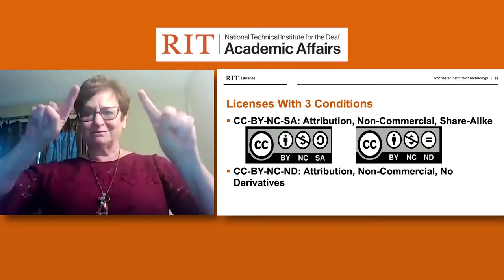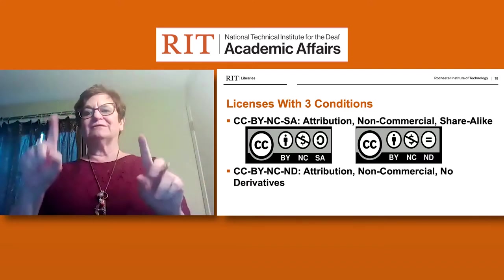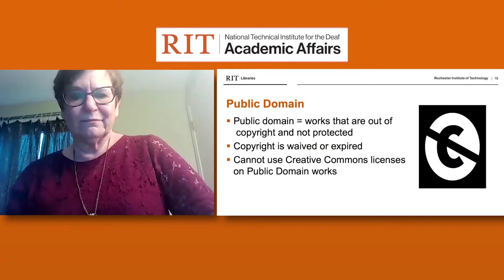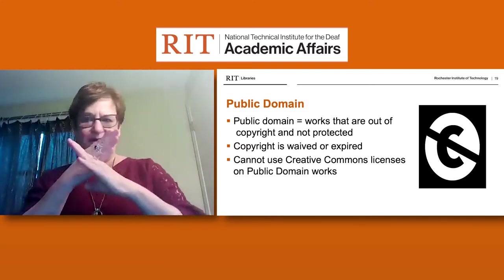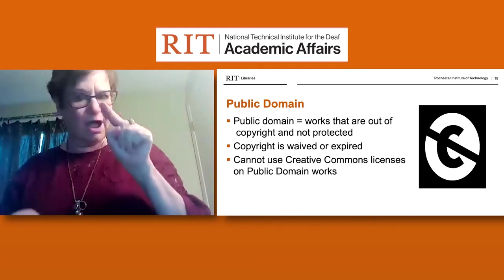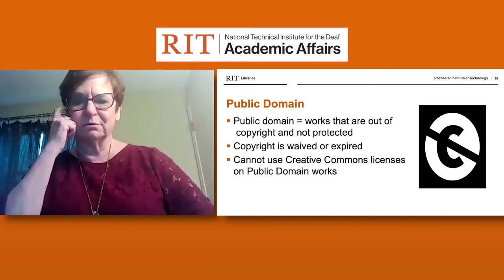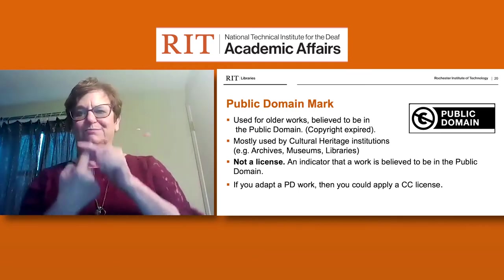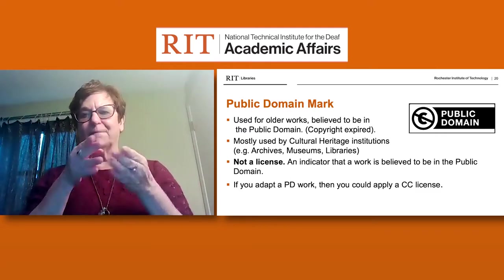There are three conditions like attribution: you can't sell it, you must share alike or cite, you cannot gain income from it, and you can't make any adaptations to the material. Lastly, there's public domain — works not protected under any copyright. Copyright is waived or has expired, meaning you cannot use a Creative Commons license because it's public domain and everyone is equally able to access it. You'll see a particular box around an image that allows individuals to identify something housed within the public domain.